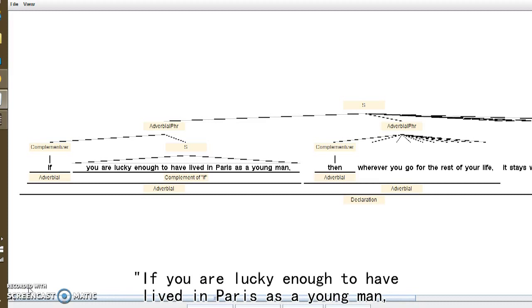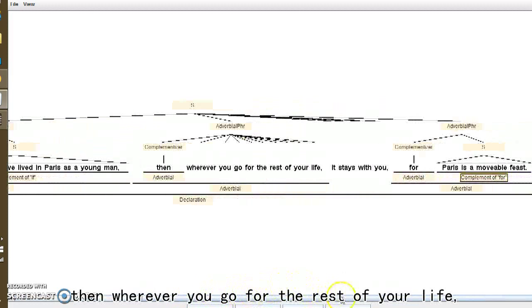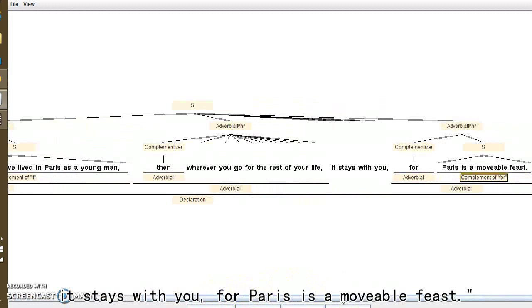The sentence I will diagram is from Hemingway's book, A Moveable Feast. Here is the sentence: If you are lucky enough to have lived in Paris as a young man, then wherever you go for the rest of your life, it stays with you, for Paris is a movable feast.